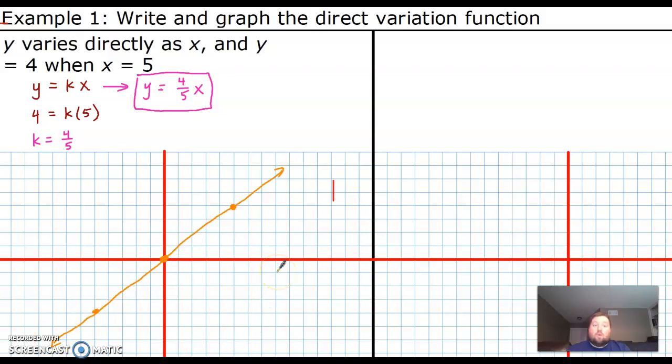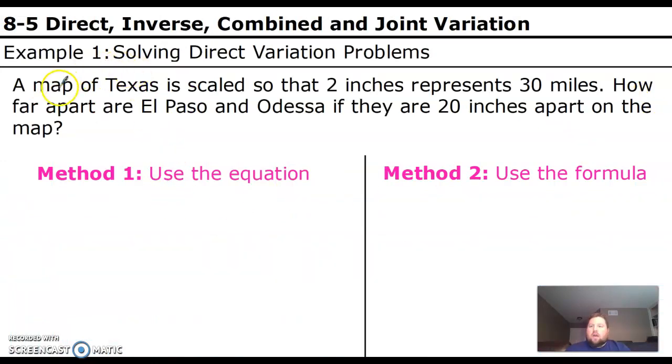We also need to be able to do word problems that involve these. So that's our next one. A map of Texas is scaled so that 2 inches represents 30 miles. How far apart are El Paso and Odessa if they are 20 inches apart on the map? So there's two methods. I want you to know how to do both.